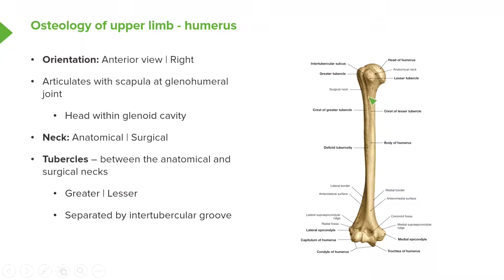The humerus has two necks. One neck is known as the anatomical neck, and the anatomical neck sits just behind the head of the humerus. It's an important attachment site for the joint capsule of the glenohumeral joint. This dotted line is indicating the anatomical neck, which is positioned between these two important bulges of bone known as tubercles. The tubercles sit distal to the anatomical neck, so the anatomical neck is positioned between the head and these two tubercles.